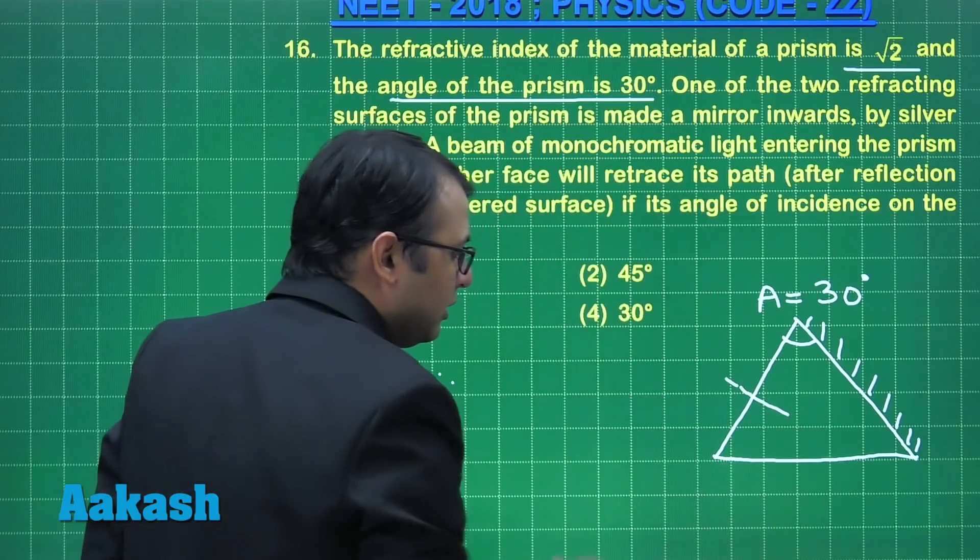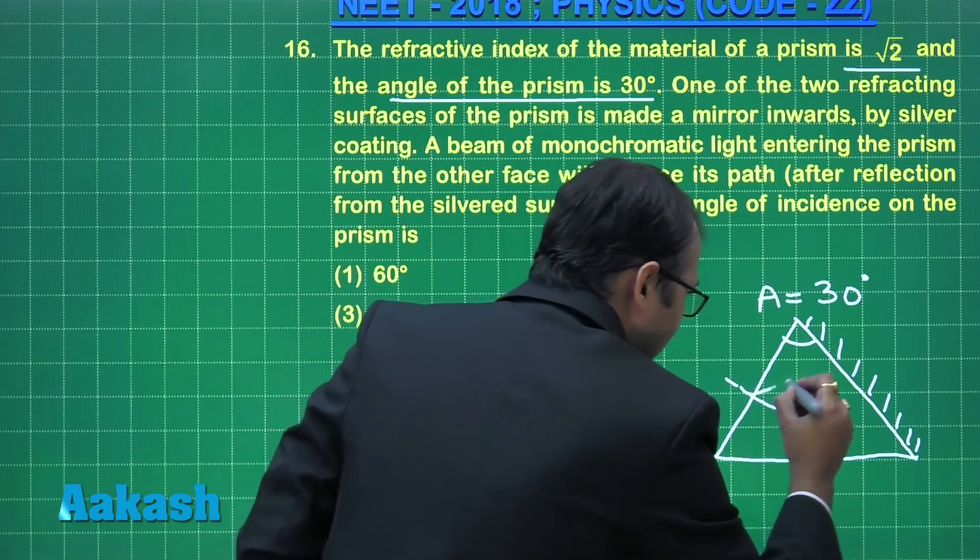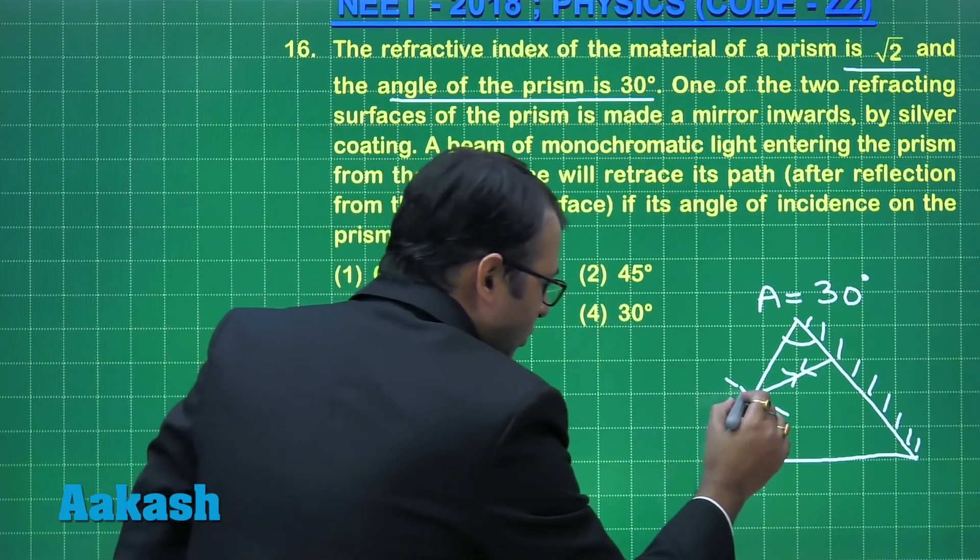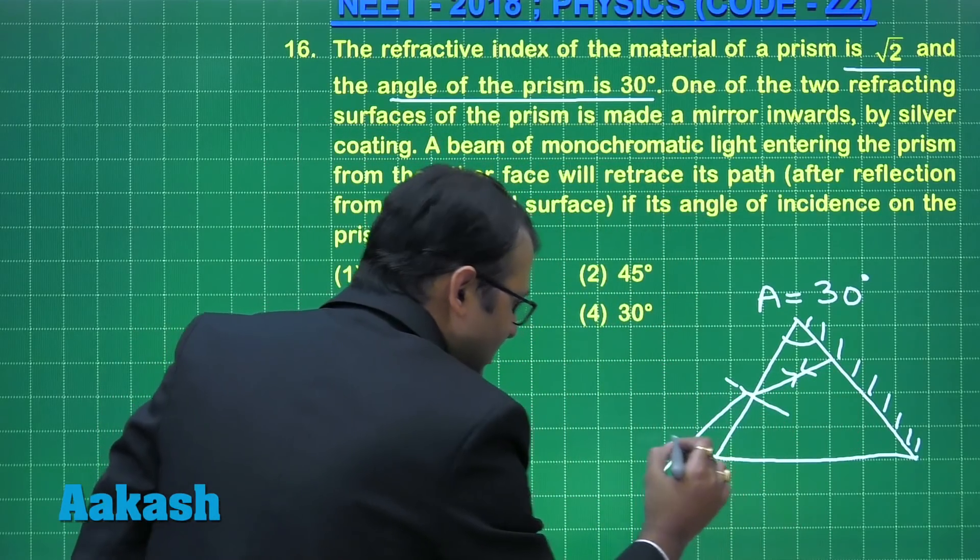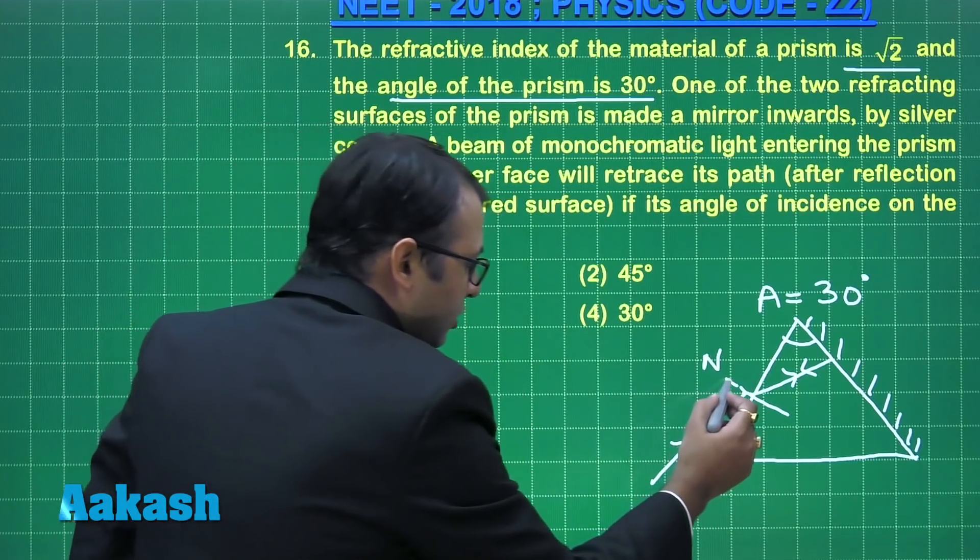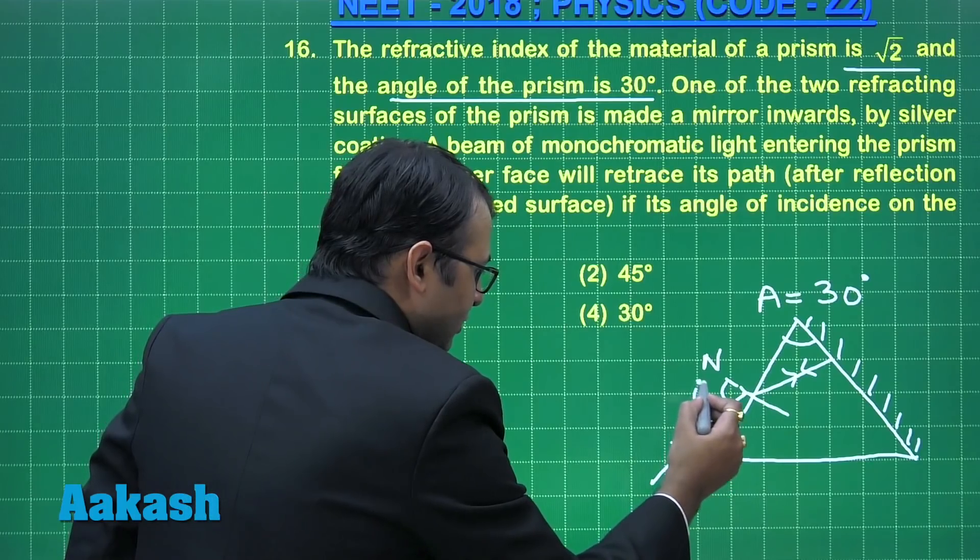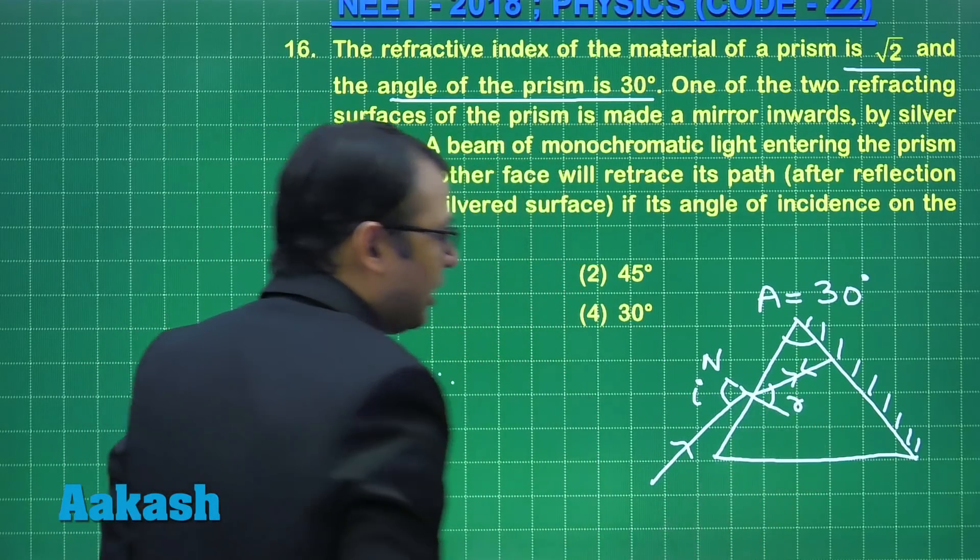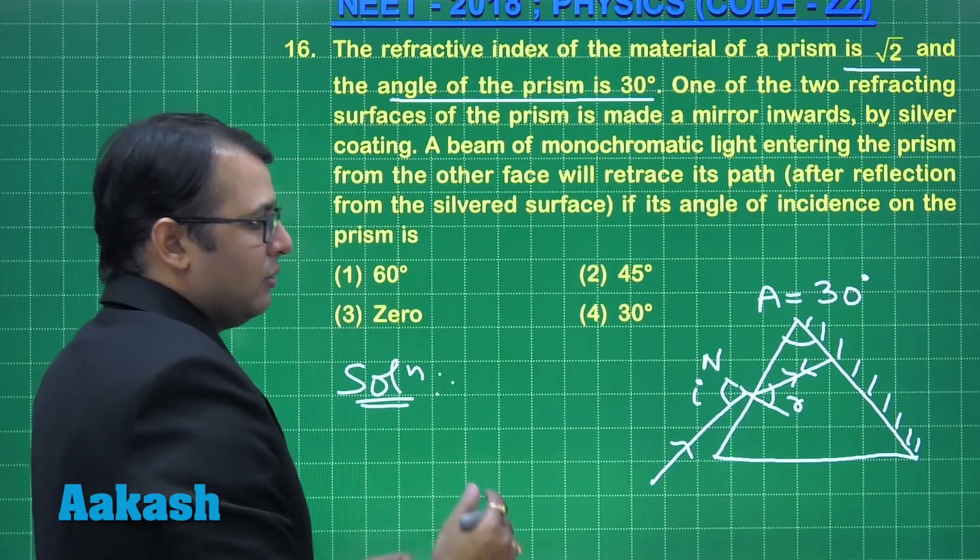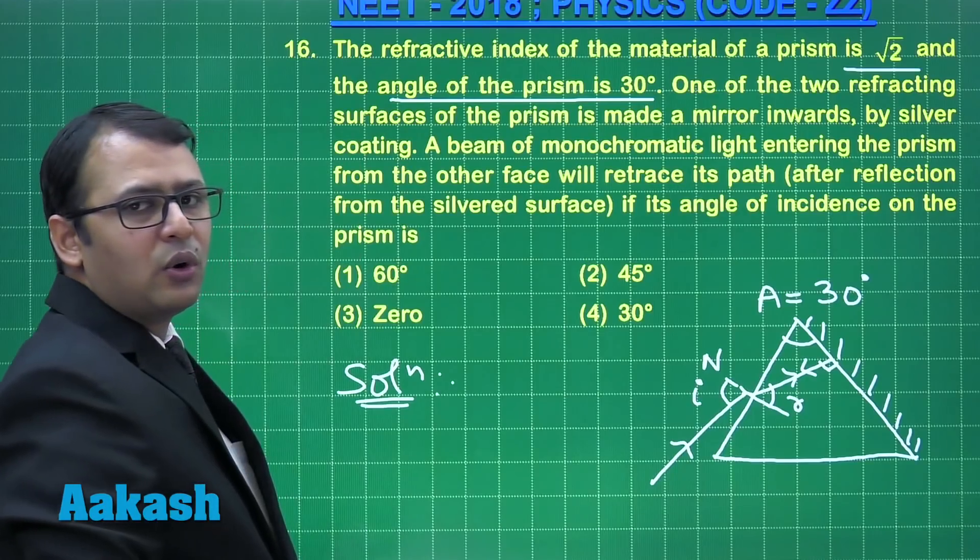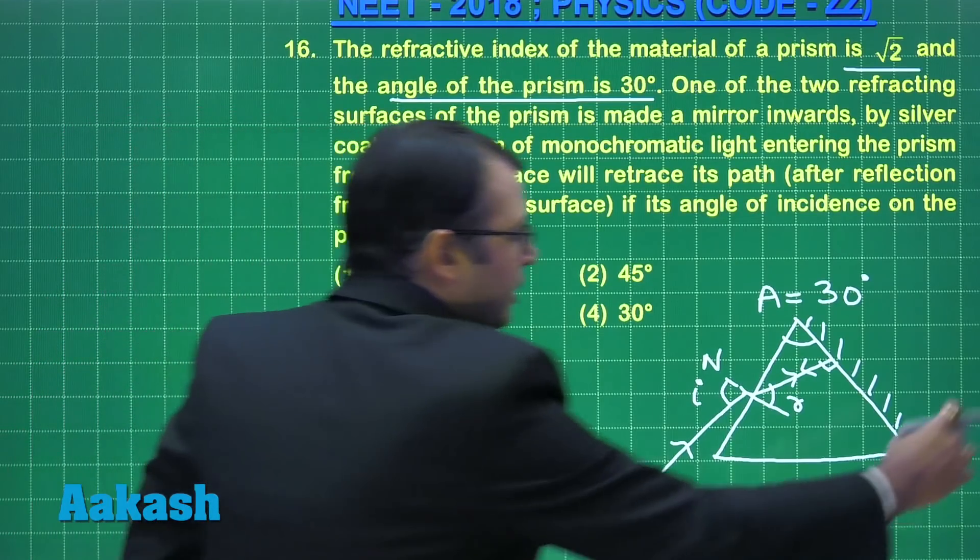Then a beam of monochromatic light entering the prism from the other face will retrace its path. That means light enters and comes back out. Let's draw it. If this is normal, one light ray goes in and comes back. This is the normal. This would be angle of incidence i. This would be angle of refraction r. And we are told that since the light is retracing, this angle would be 90 degrees.